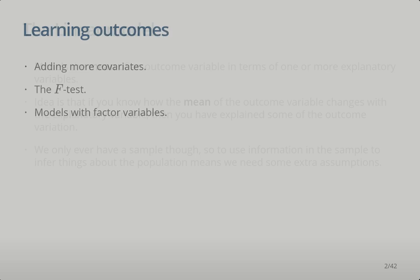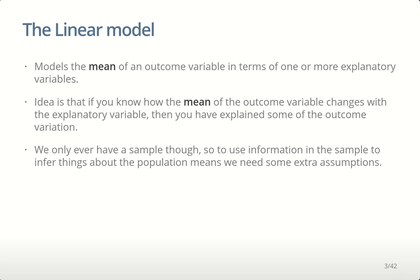The linear model models the mean of an outcome variable with respect to one or more explanatory variables. The idea is that if you know how the mean of the outcome variable changes, then you've explained some of the outcome variation. We generally fit the model to a sample of data and use the relationship we see in the sample to infer something about the population, which means we need certain assumptions.